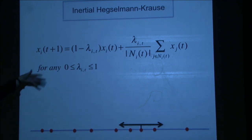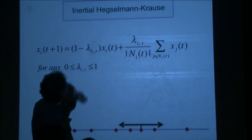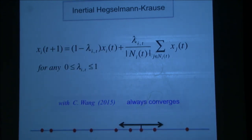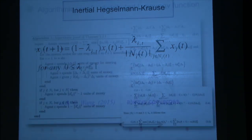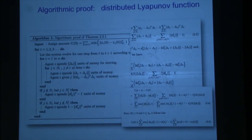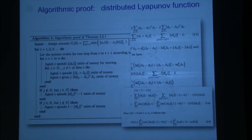This is highly non-deterministic — at any step these numbers can be anything you want. We show — this is with Chu Wang, a former student of mine — that this always converges in one dimension. Not in higher dimension.